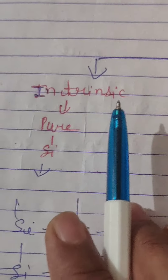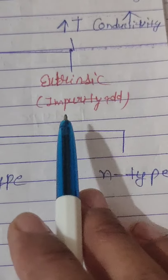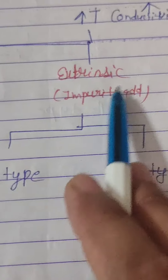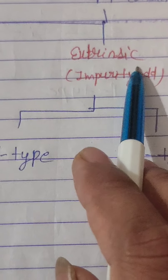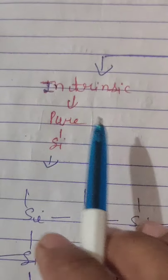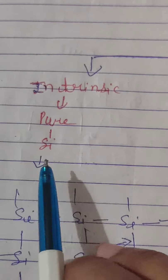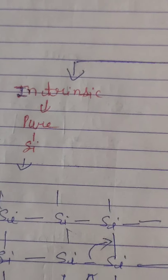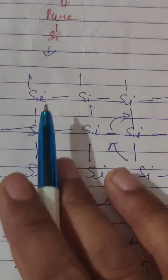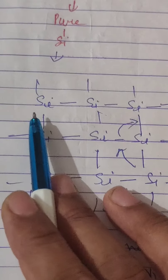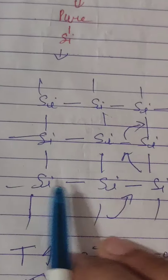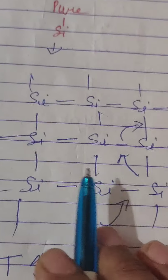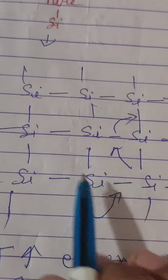Intrinsic means a pure semiconductor — no impurity is added. Extrinsic means impurity is added to the semiconductor. Intrinsic is a pure type of semiconductor. For example, silicon is a semiconductor. Silicon in crystal form contains only silicon atoms — this is an intrinsic semiconductor.